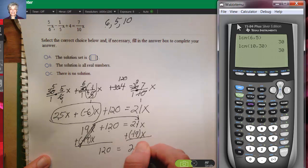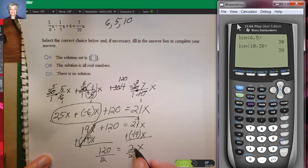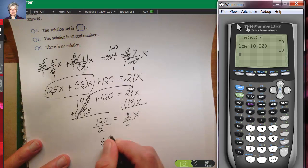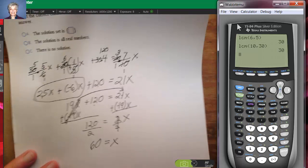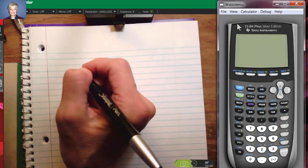Now I've got 2x equals 120. If I divide by 2 and divide by 2, these 2's will cancel. 120 divided by 2 is 60, and so the answer I get is 60 equals x. But I'm not 100% sure it's right, am I? So, I'm going to have to check my answer.